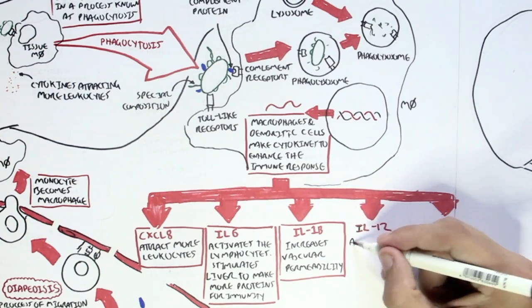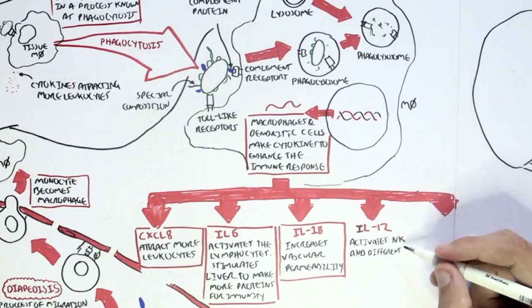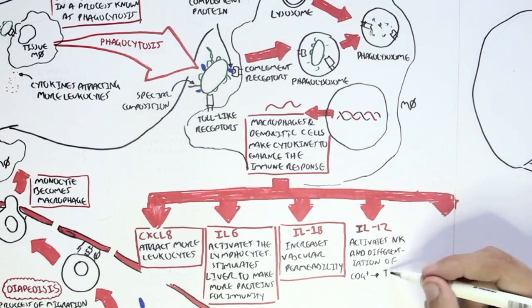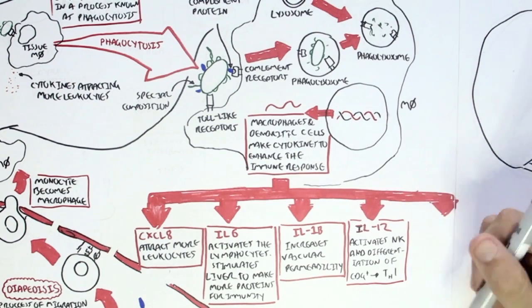Interleukin-12, which activates the natural killer cells and differentiation of a naive CD4 cell into a T-Helper-1 cell.